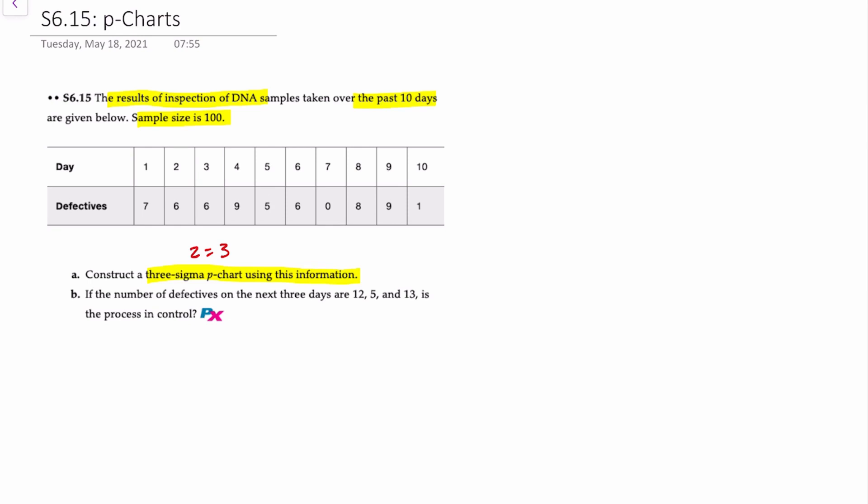The second requirement is if the number of defectives on the next three days are 12, 5, and 13 to determine if the process is in control.